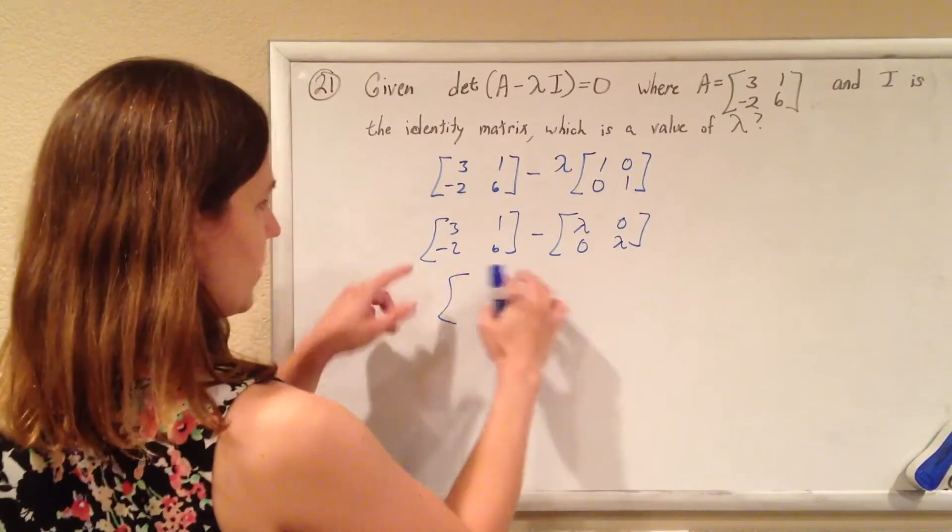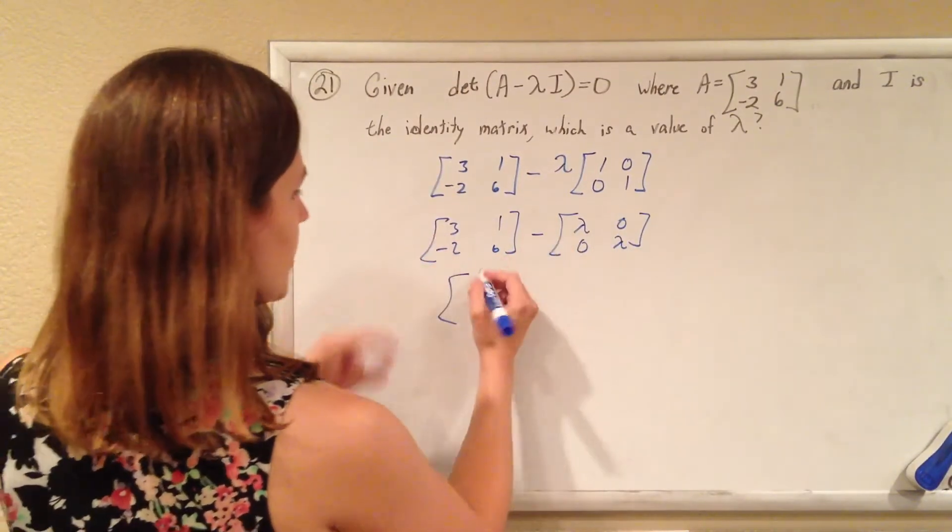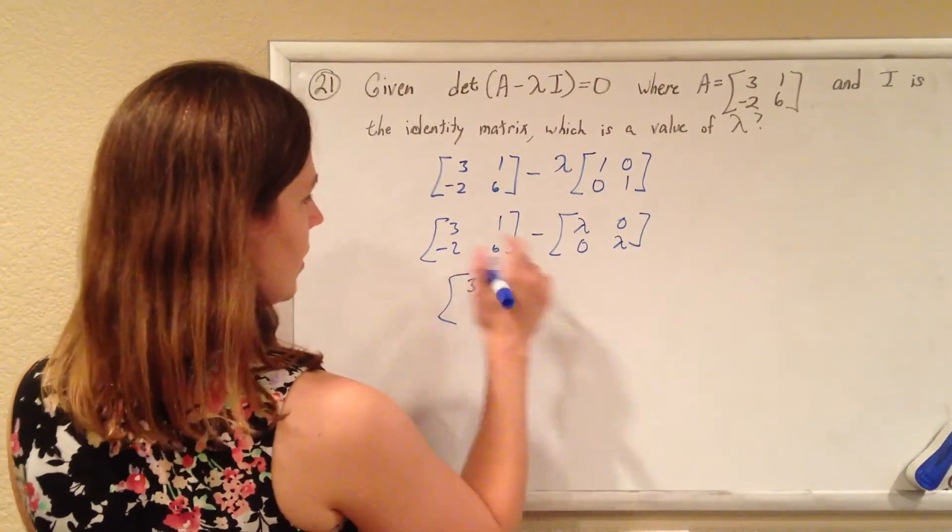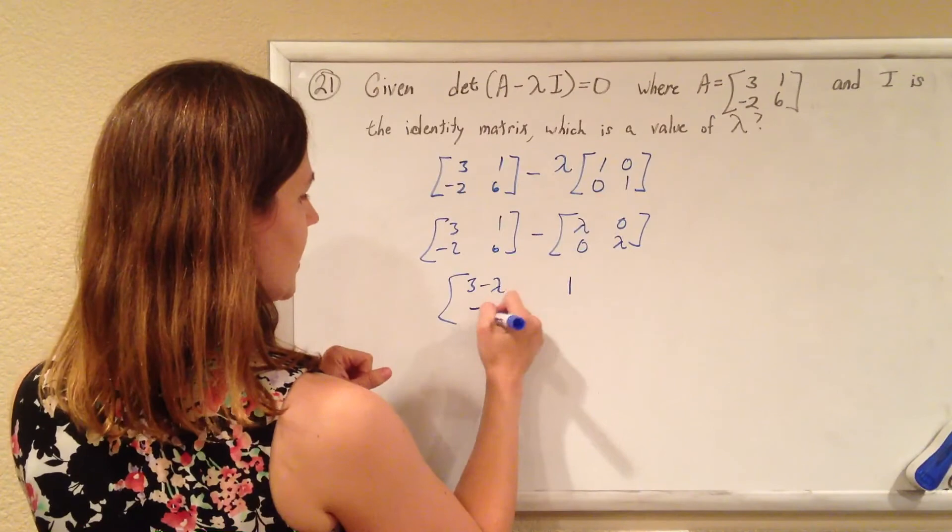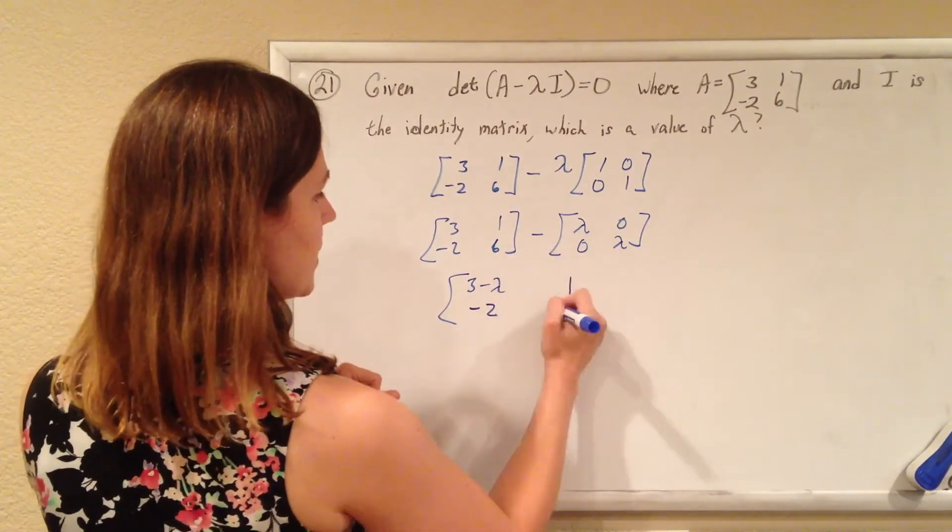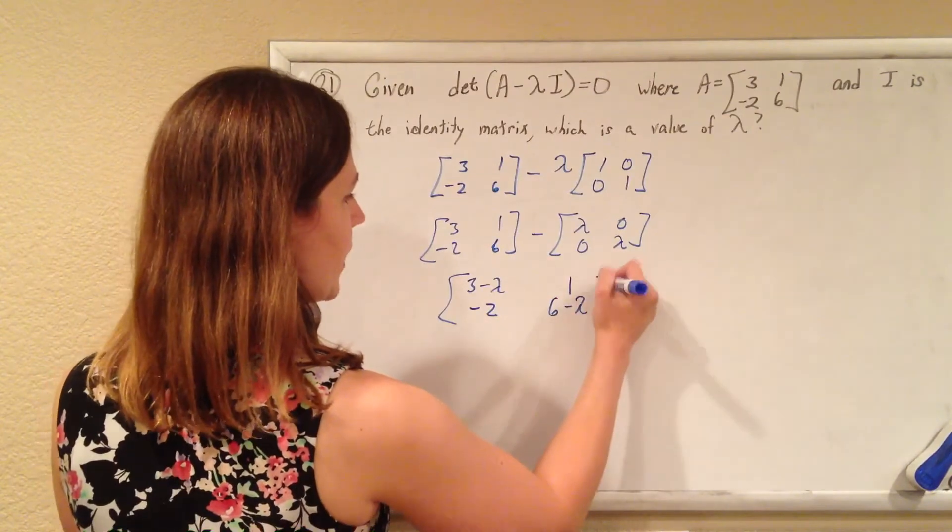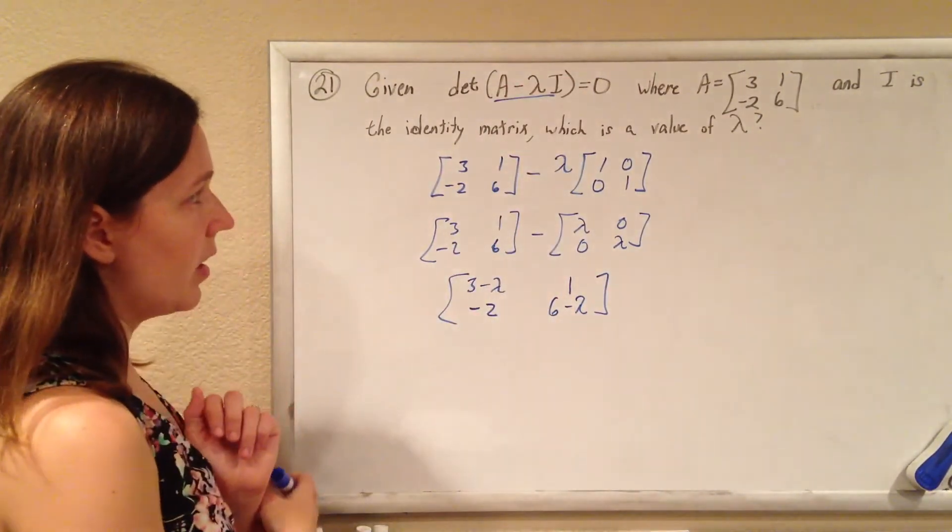And then to combine two matrices, just subtract their component parts. So 3 minus lambda, and 1 minus 0 is 1, negative 2 minus 0 is negative 2, and that's 6 minus lambda. So that's A minus lambda I.